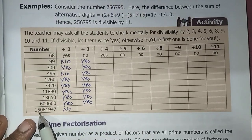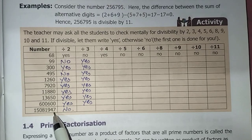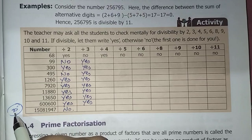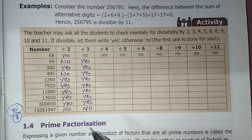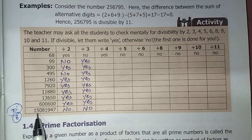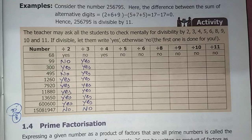Continuing with divisibility by 3: 1 plus 5 is 6, 6 plus 8 is 14, 14 plus 1 is 15, 15 plus 9 is 24, 24 plus 4 is 28, 28 plus 7 is 35. 35 is in the 3 table, so yes. Next number: 1 plus 5 is 6, 6 plus 4 is 12, 12 plus 1 is 13 — 8 is not in the 3 table, so no.